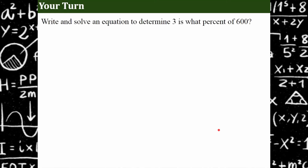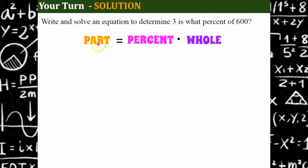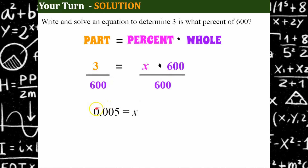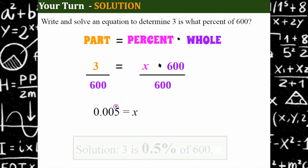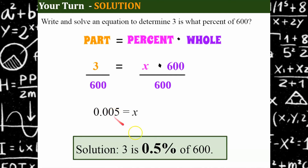Now I'm not giving any hints — you have to identify the missing part, write an equation, and solve. Our percent equation: 3 is our part, equal to our percent x (what percent is unknown), times our whole 600. To solve for x, divide both sides by 600. 3 ÷ 600 = 0.005, which is five one-thousandths. We need the percent, so convert the decimal by moving the decimal point two spaces right: our answer is 0.5 percent — one half of a percent. So 3 is 0.5 percent of 600.